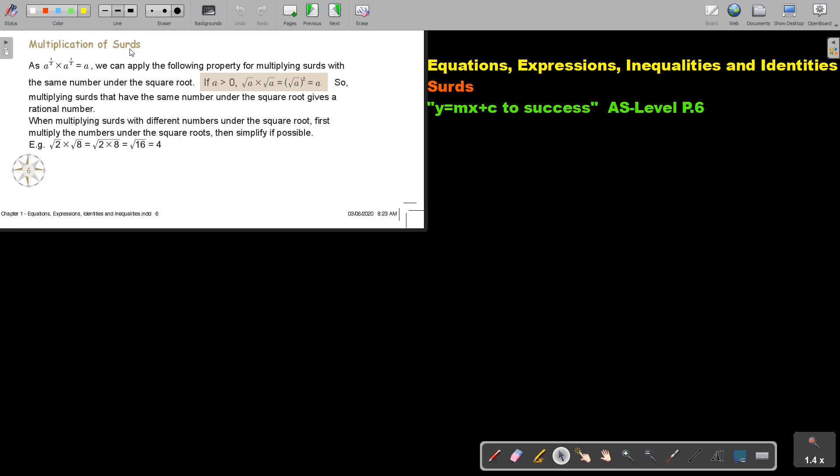Multiplication of surds. As a half times exponent a half is 1 because a half plus half is 1, we can apply the following property for multiplying surds with the same number under the square root.